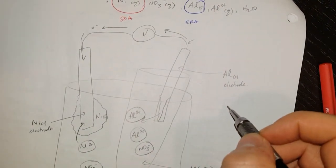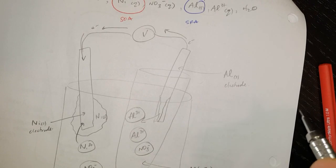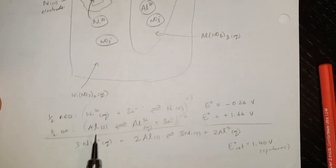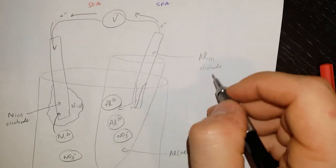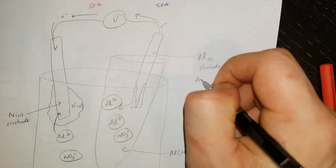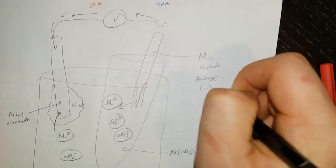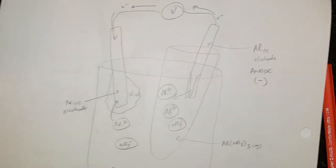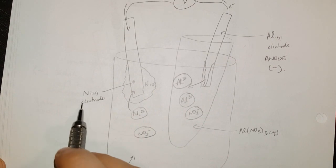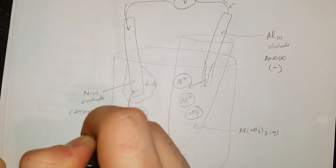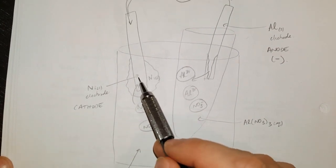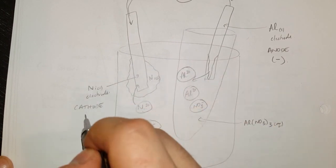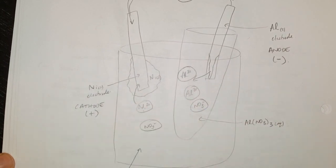Let me identify my anode and cathode. An-ox: oxidation was the aluminum — we see aluminum is losing electrons, so it's oxidation — which means the aluminum electrode is my anode, and they assign negative to it. That means the nickel electrode is the cathode, because that's where reduction is taking place. The reduction is a gain of electrons: nickel ions pick up electrons and form solid nickel. So the cathode is going to be positive.